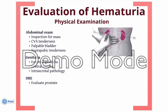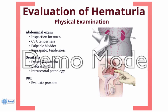Lastly, one should perform a digital rectal examination. This will help highlight any significant concurrent prostate diseases, such as BPH, significant prostate nodularity suggestive of prostate cancer, or any significant prostate tenderness. All these conditions could contribute to the diagnosis of hematuria.